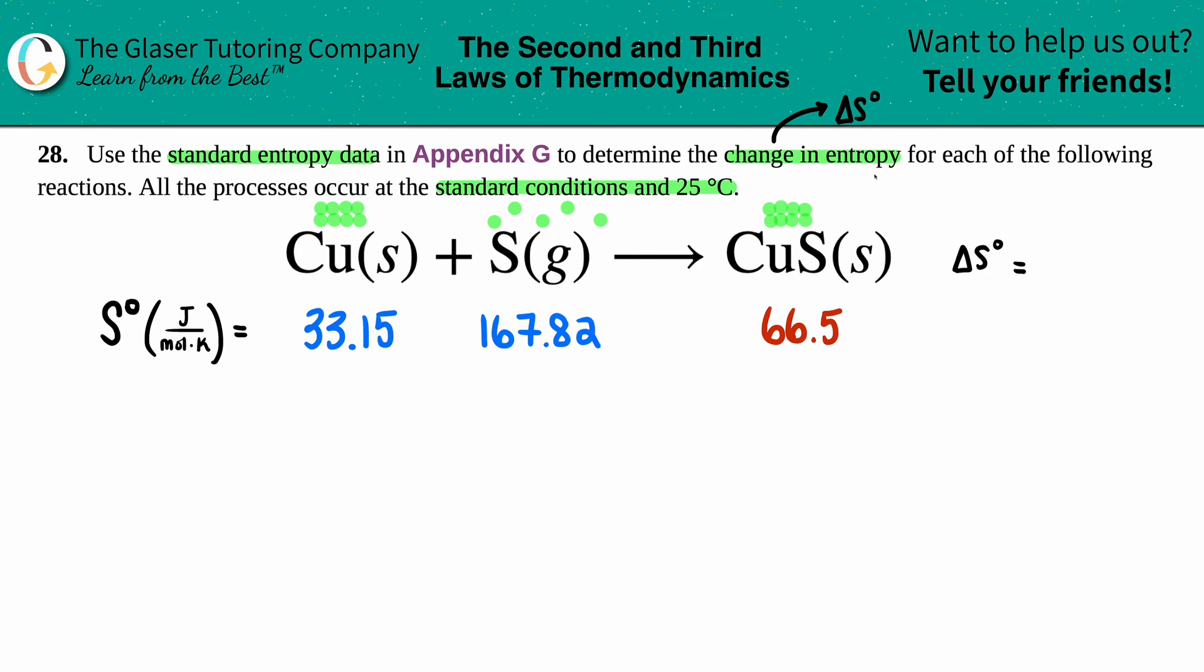Entropy is always talking about randomness or chaos, disorder. So if you had a lot of randomness in the beginning, you had a mole of gas, but then you lost that mole and everything is structured, you lost your disorder. You lost your randomness. So if you lose it, that is represented by a negative value. So we can guesstimate that this delta S value is going to be negative.